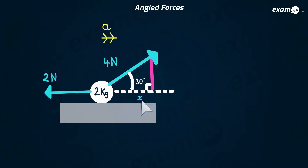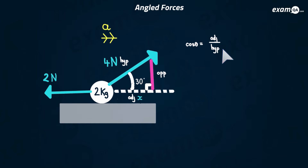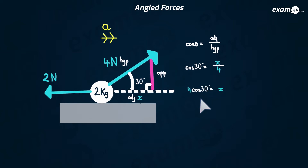To find X, we use SOHCAHTOA. Label the sides opposite, adjacent, and hypotenuse. We want X, the horizontal part, which is the adjacent, and we know the hypotenuse is four Newtons, so we use cosine. Cos theta equals adjacent over hypotenuse, so with the angle being 30 degrees, X equals four cos 30, which gives 3.46 Newtons — slightly less than the full four Newtons.